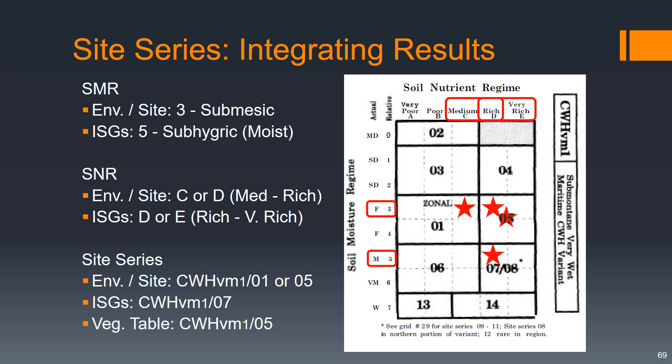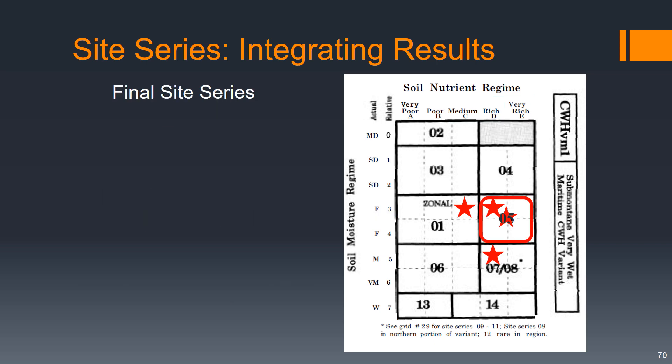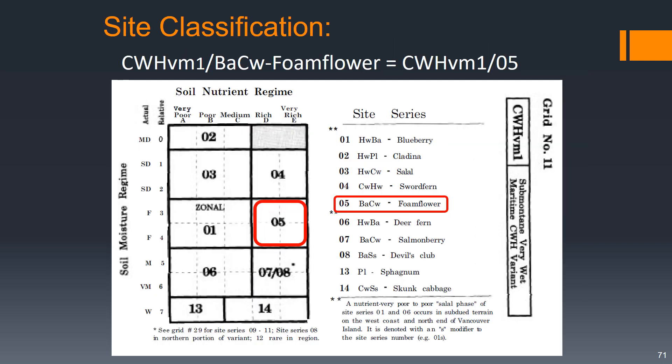So if we look at those things all together for our final classification, a site series of CWH VM 105 seems like the best fit for what we found in our different analyses. That puts us at an amabilis fir, western red cedar, foam flower site association.